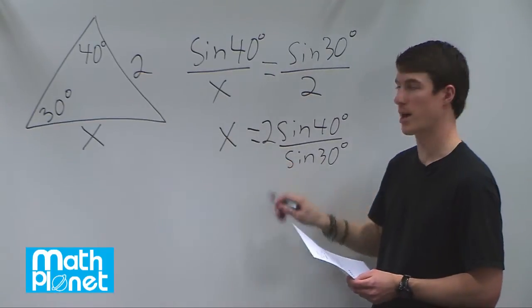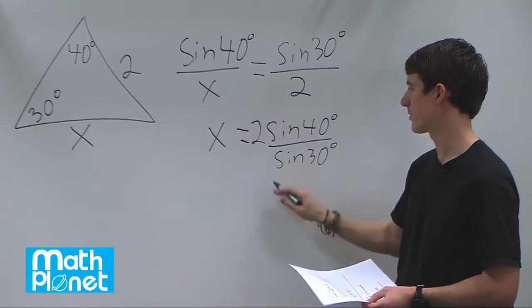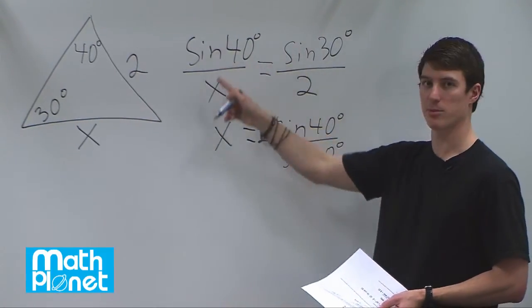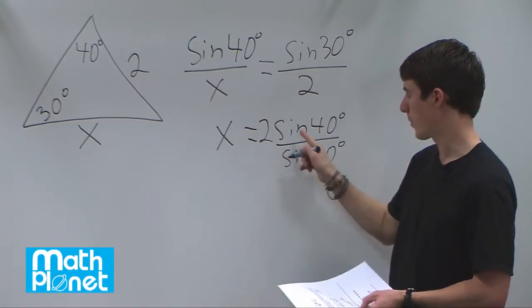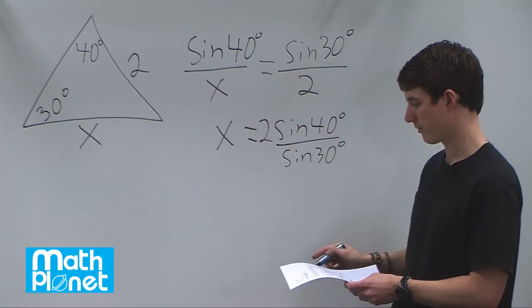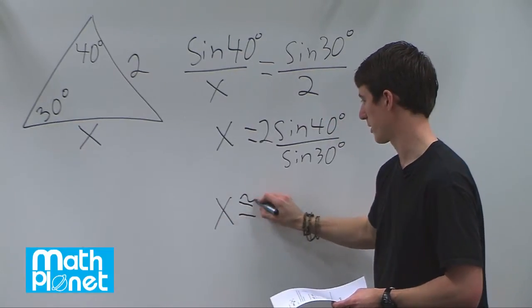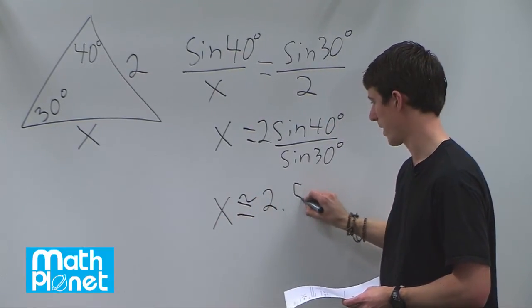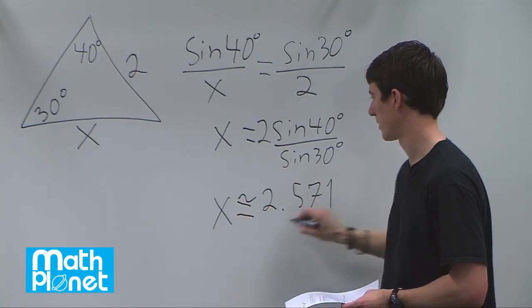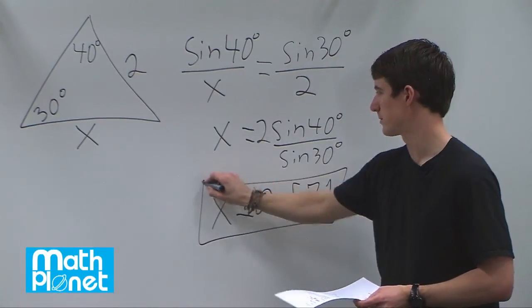We have x is equal to 2 times sine of 40 degrees divided by sine of 30 degrees. This comes directly from the sine law, and we can just plug this into our calculators and solve. This just gives us x is equal to approximately 2.571. And there we have it.